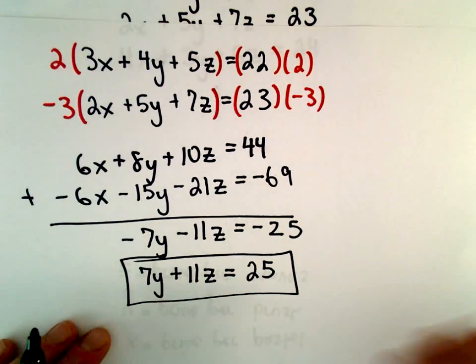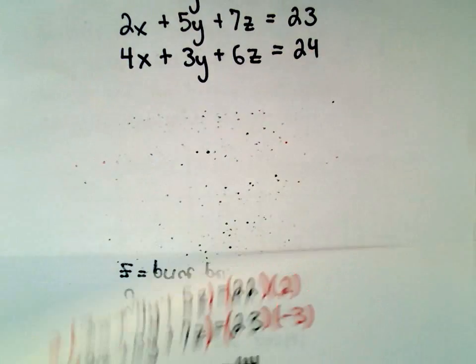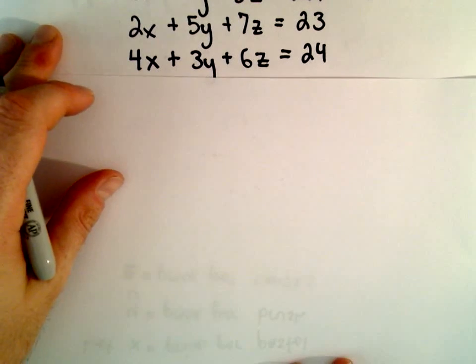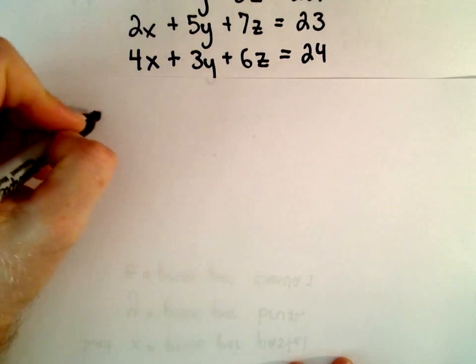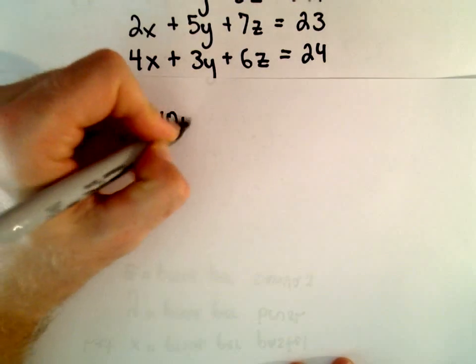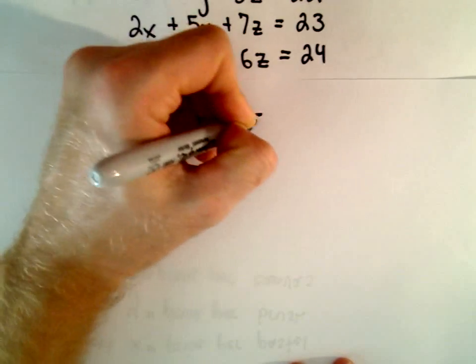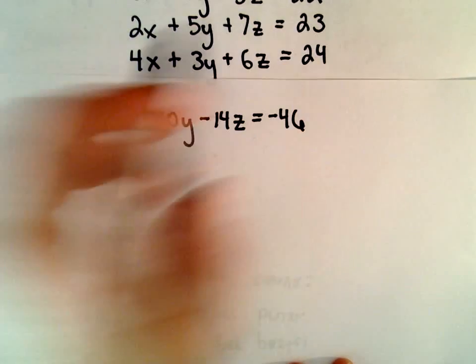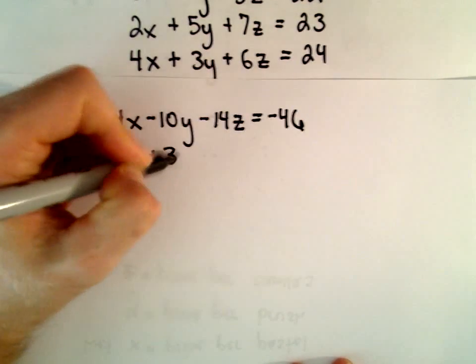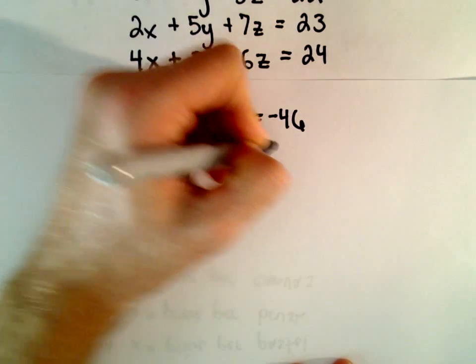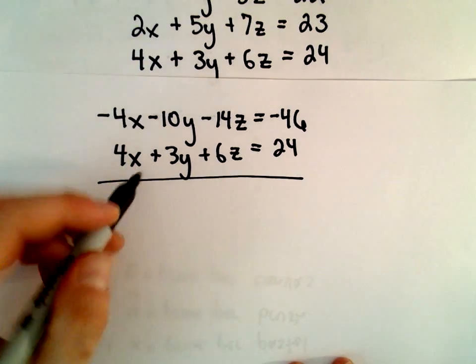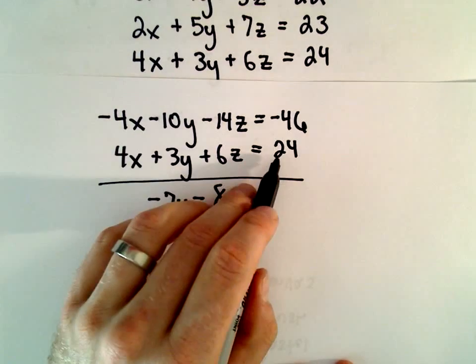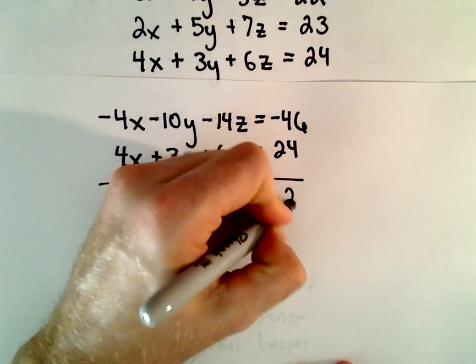So that's one equation we'll come back to. I'm also going to take the second and third equations, and again eliminate the X's. I'm going to multiply the second equation by negative 2, which gives us negative 4X minus 10Y minus 14Z equals negative 46. I'm going to leave the third equation alone. So if we add those, we'll have negative 7Y minus 8Z, and negative 46 plus 24 will be negative 22.